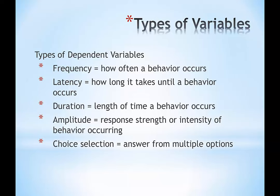Finally, choice selection is a classic—it's your answer from multiple options. Students are very familiar with this type of dependent variable. Every time you've taken a multiple choice test with A, B, C, or D as the correct answer, your answer in that situation would be considered a dependent variable measure. It's not really about frequency, latency, duration, or amplitude—it's your choice selection from a series of options.